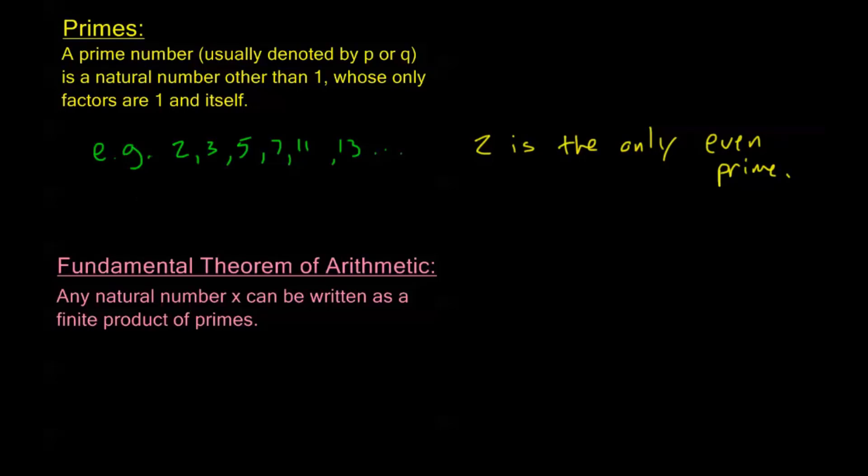And it says that any natural number x can be written as a finite product of primes. Now, what do we mean by that? If I have any number x, I can write x equals p1 to the power a1 times p2 to the power a2 times dot dot dot times p sub k to the power a sub k.